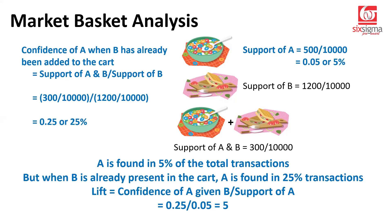What does it indicate? Don't you see that while A was found in 5 out of 100 transactions earlier, when we have this intelligence available that B has already been added to the cart, now A is found in 25 out of those 100 transactions. So how many folds has the likelihood of A's purchase gone up, given that we have information about B being added to the cart? It's five times more. This ratio is simply telling us it's five times more likely that A and B will be bought together compared to their independent purchases.